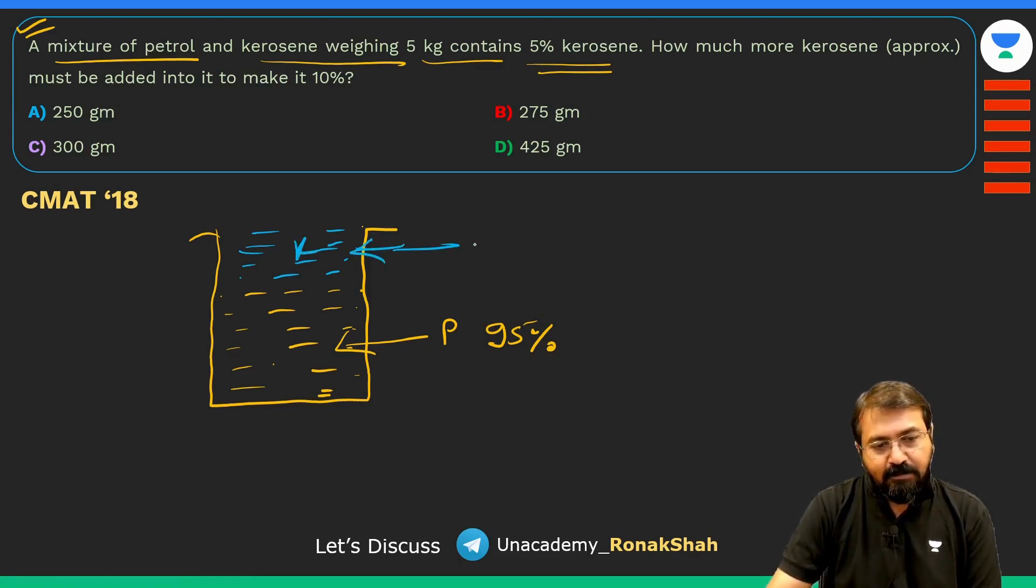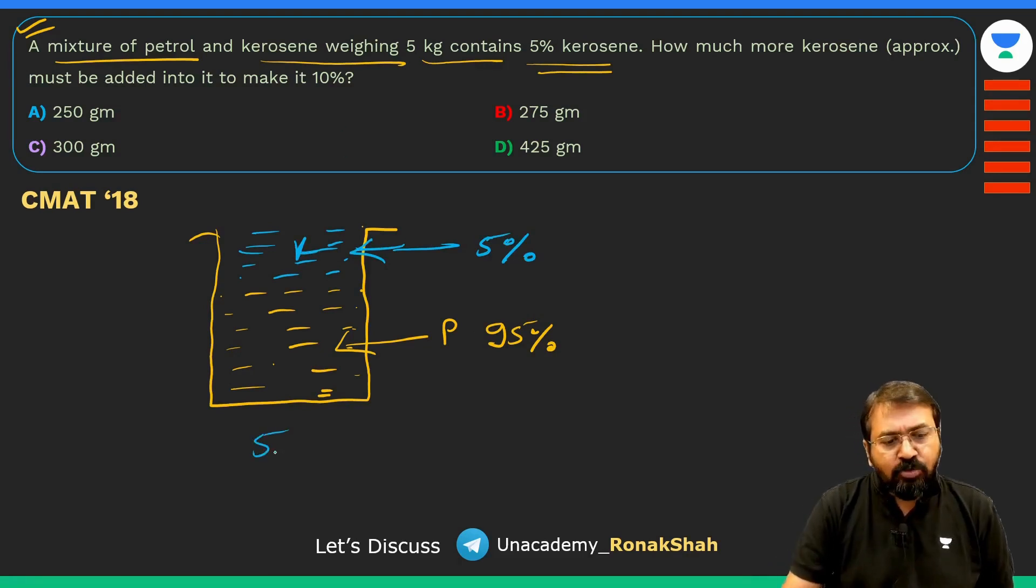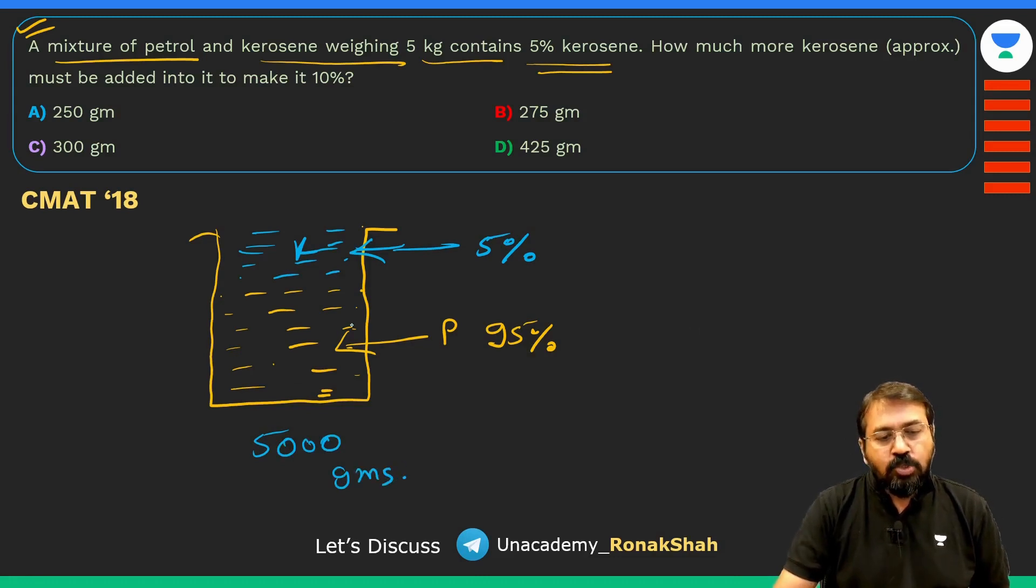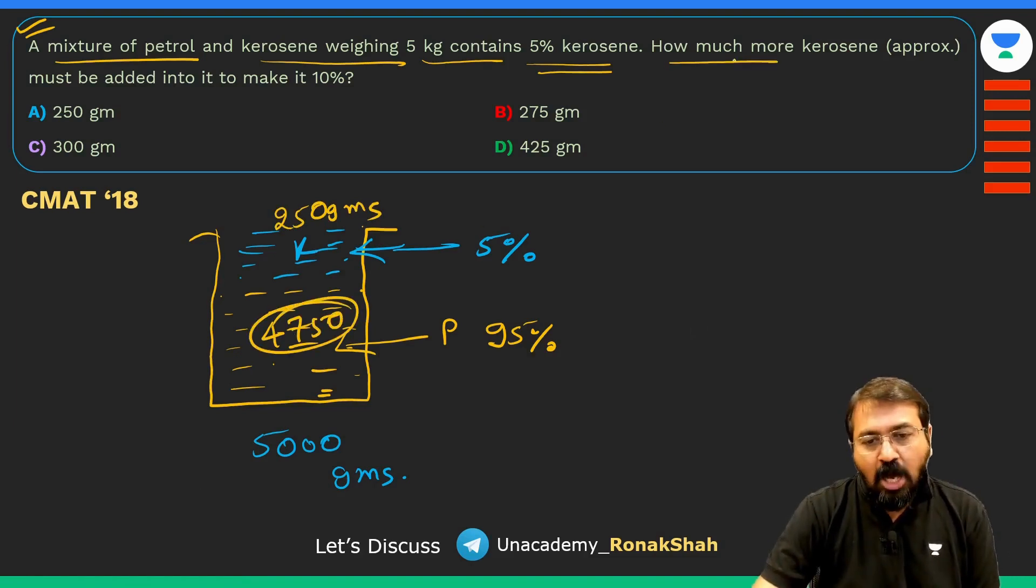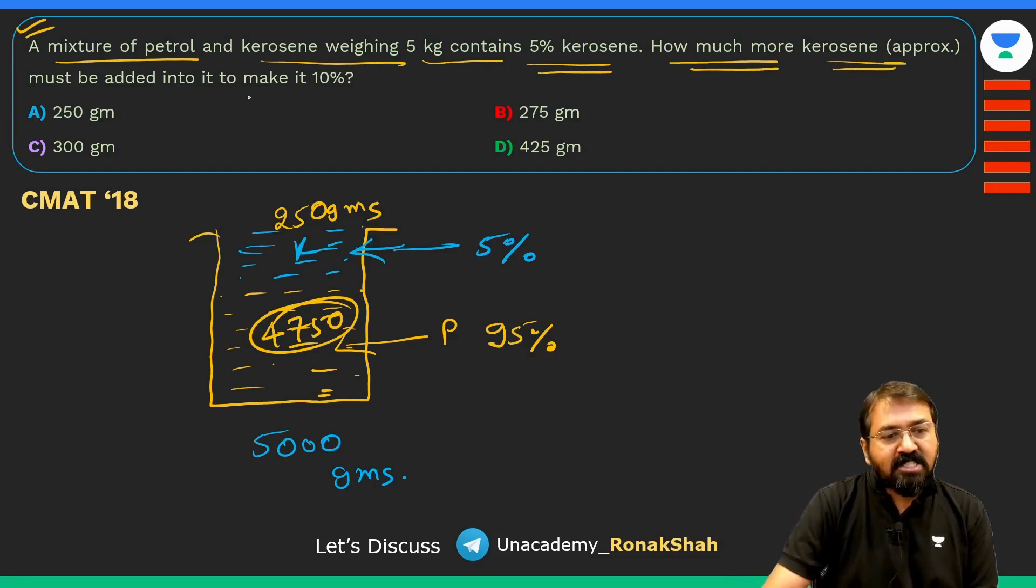And kerosene, let's indicate by blue color, so this part is kerosene which is 5%. Now we have total 5 kg weight, so I am just converting into grams, so it is total 5000 grams. What will be 5%? Can we say 5% of 5000 is 250 grams.